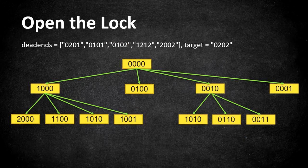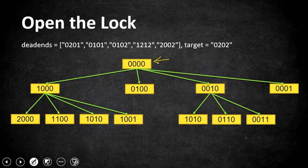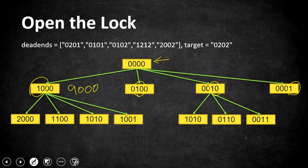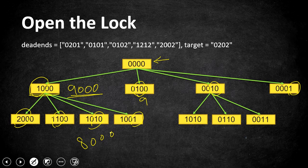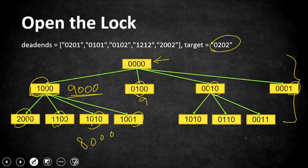Here is the tree structure of our inputs. We start from 0000 and explore all possible combination of paths. From 0000 we can move any of the four wheels to 1 or 9 — that gives us 1000, 0100, 0010, 0001, 9000, 0900, 0090, or 0009. From each of those nodes we again generate their children. We do BFS by exploring all possible paths and when any path reaches 0202, we count the number of steps taken at that level and return it as output.